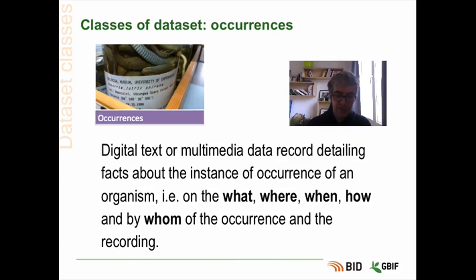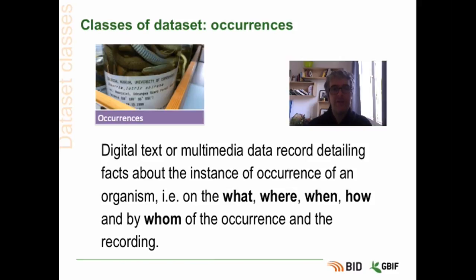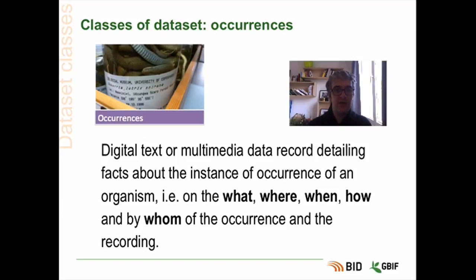Classes of datasets. In general, the use of the term biodiversity data is broad and encompasses many things — for example, observations in the field, but maybe also things like genomics or images obtained through remote sensing. Now, when we are in the specific context of GBIF publishing, there are currently only three kinds or three classes of datasets that can be published. It's important for you to understand the difference between those three classes, because it will allow you to see if and how your data is currently GBIF compatible.